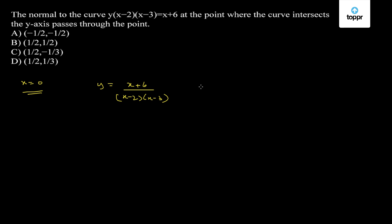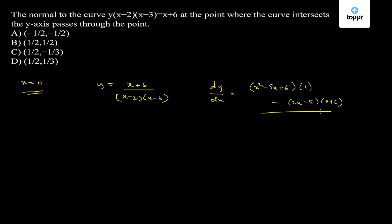The slope of the tangent at any point will be equal to the derivative. So dy/dx will be equal to (x² - 5x + 6)(1) minus (2x - 5)(x + 6), all upon (x - 2)²(x - 3)².